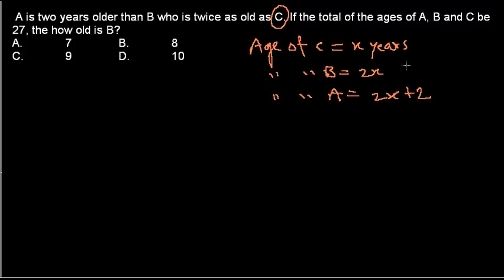So these are the values. Once we get the values, what we need to do? We need to put it in the equation. And what is it telling? That the total of the ages A, B, and C is 27 years. So let's put it now. 2x plus 2 is for A, this is the age of A, this is the age of B, this is the age of C.